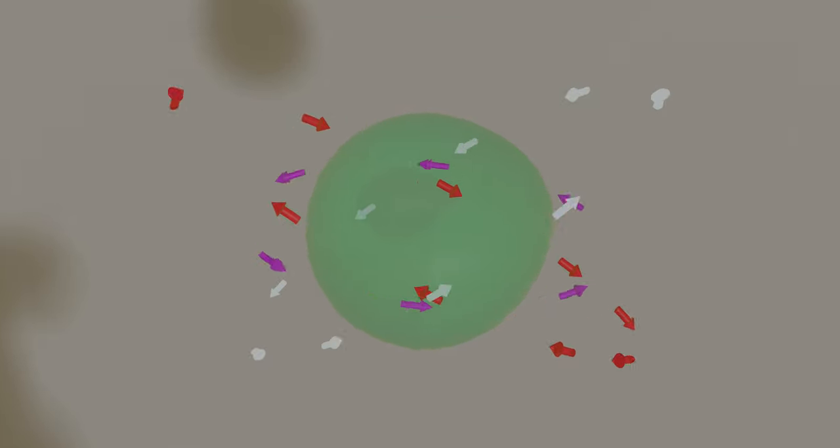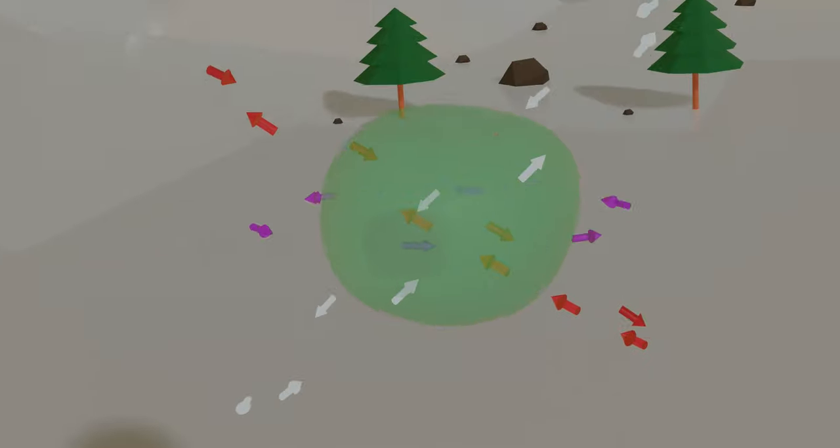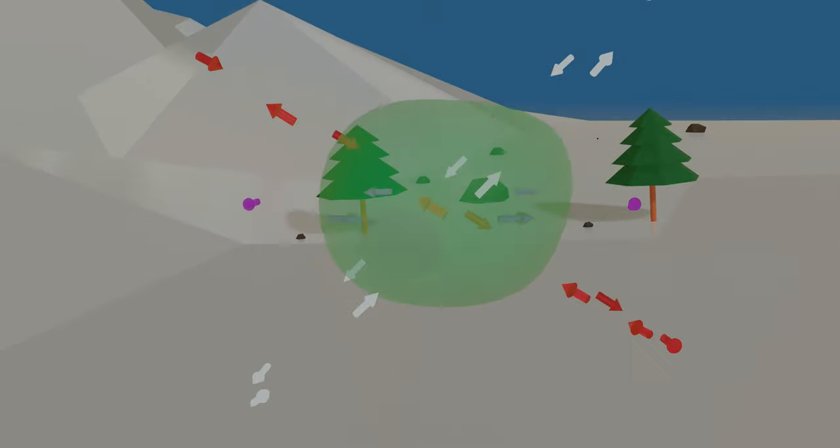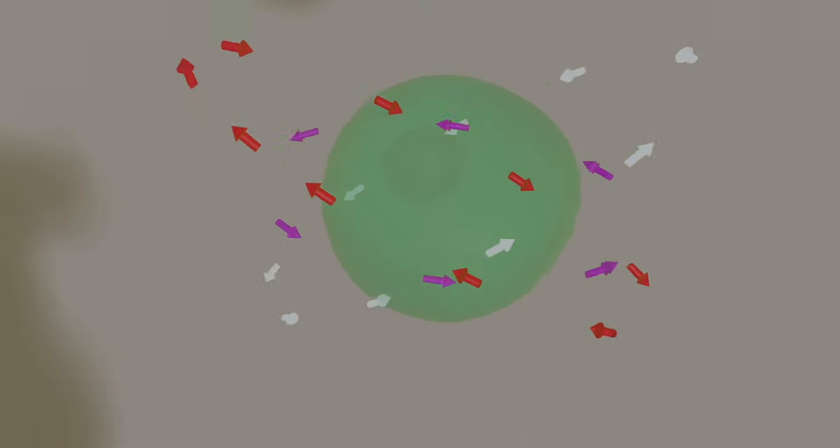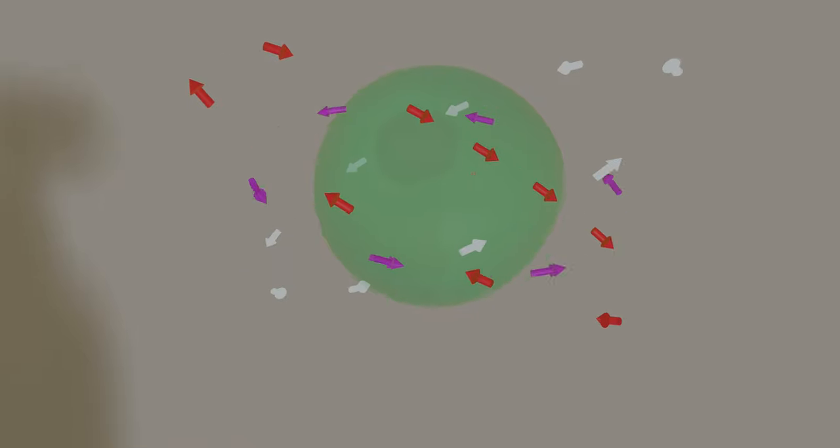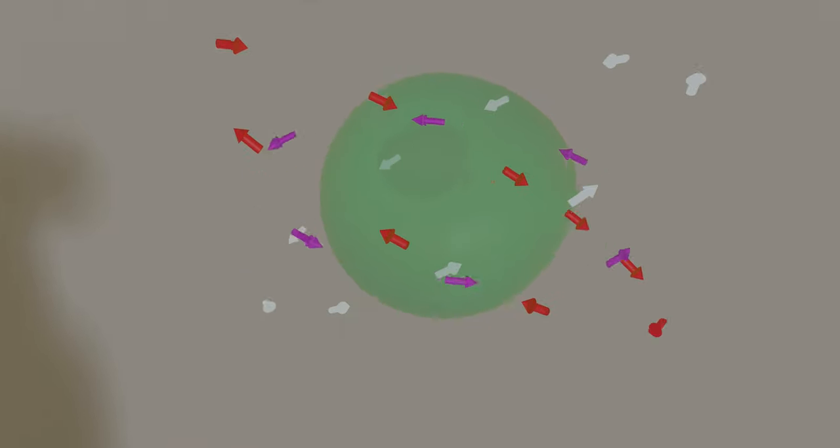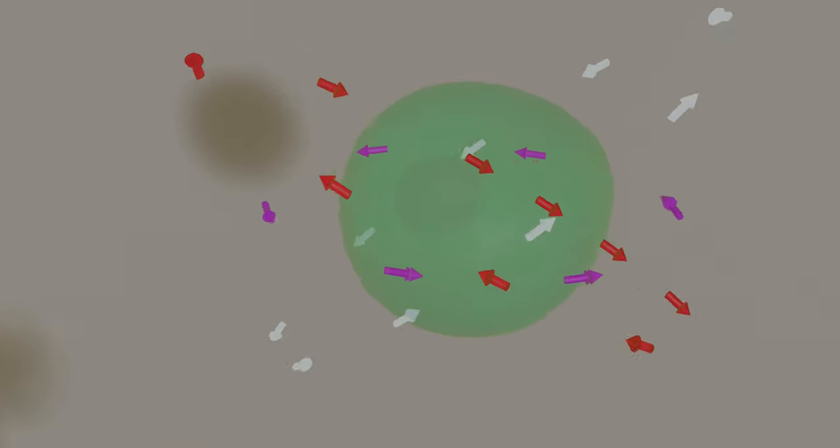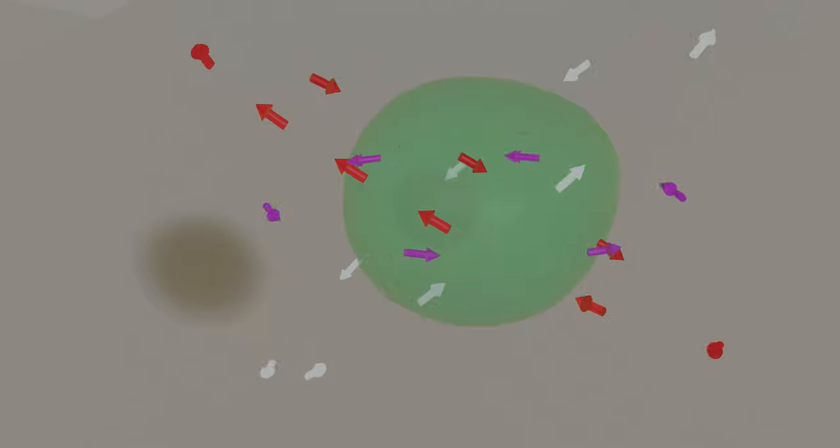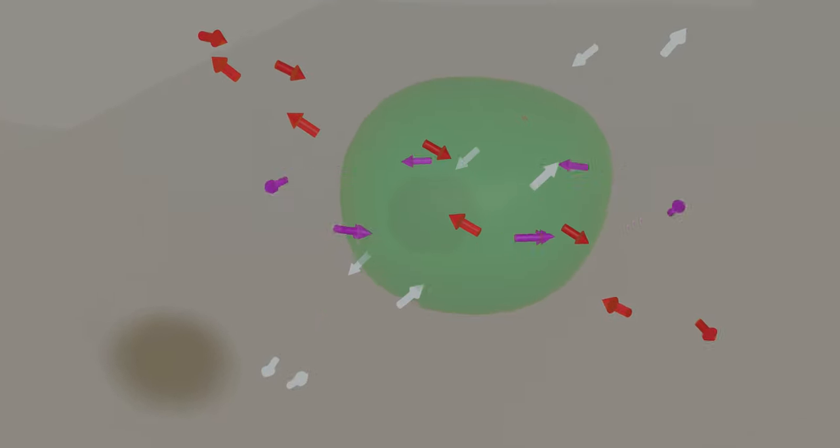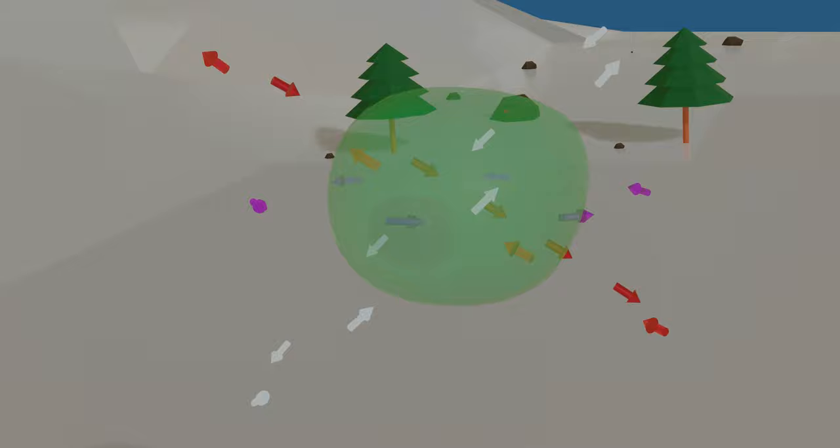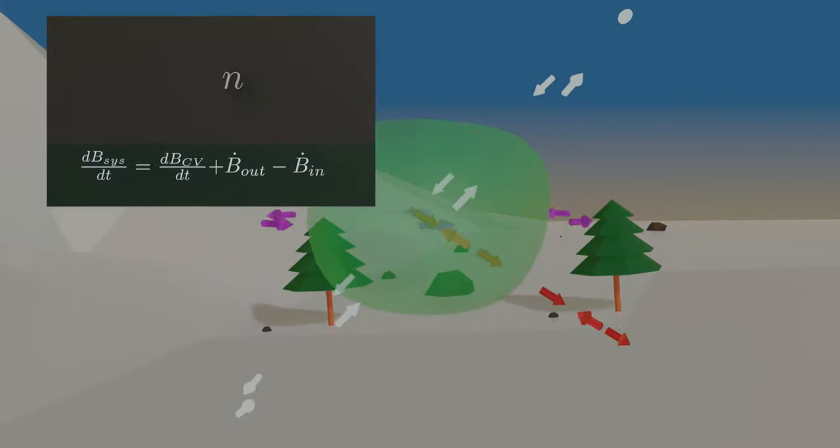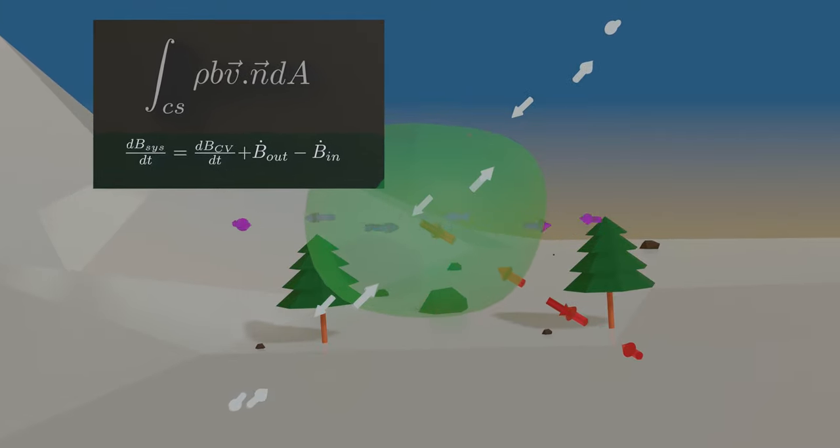Also, the velocity may not be uniform. Look at this green control volume. Masses are entering and leaving through its surfaces. So, imagine it having several inlet and outlet ports. Then, the total amount of the masses or other extensive property flowing out of this control volume is obtained by integrating over its entire control surface.